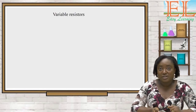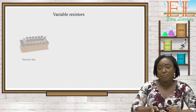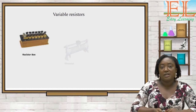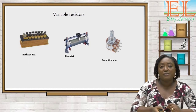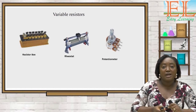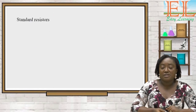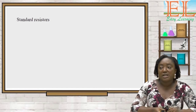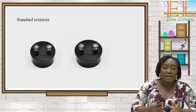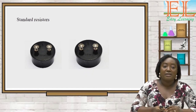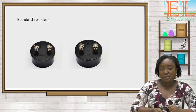We also have variable resistors: the resistance box, the rheostat, and the potentiometer. These allow us to vary the resistances, so they are not fixed. We also have standard resistors, which have fixed resistances written on their casing.